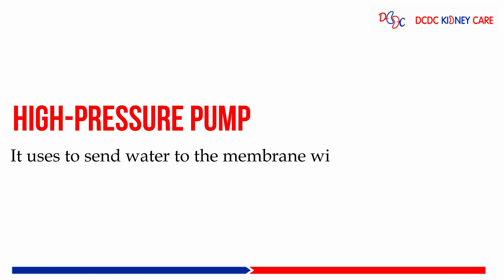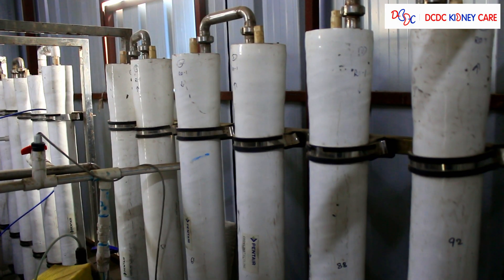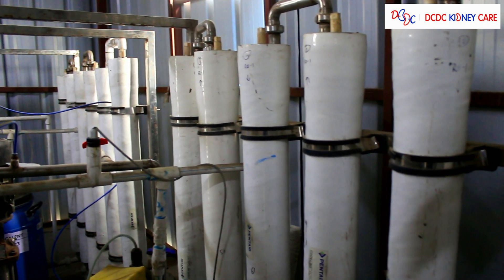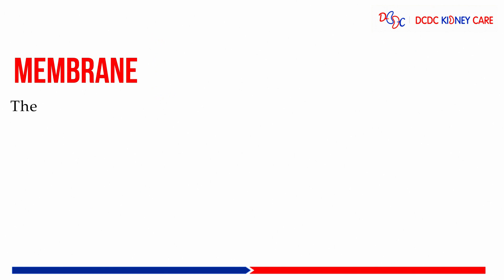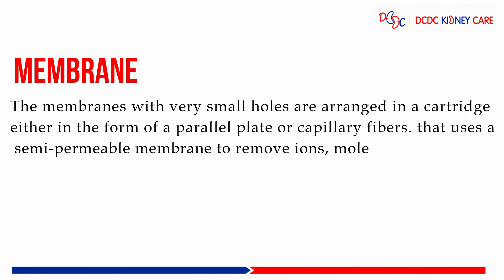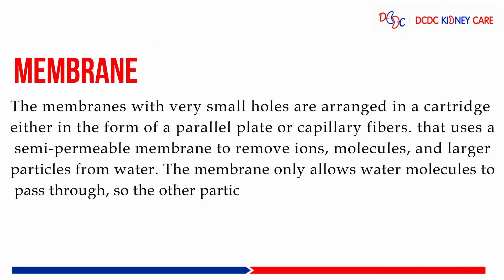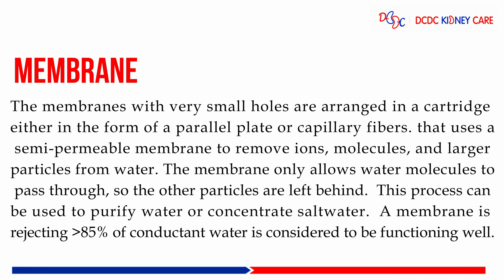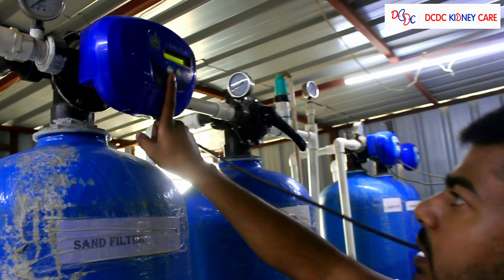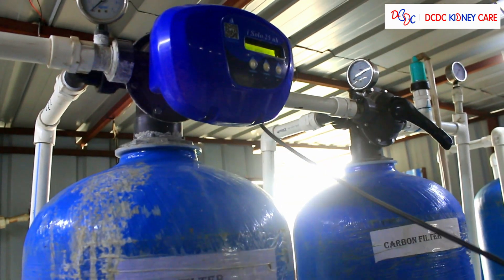Then the high pressure pump, which is used to send water to the membrane with high pressure. The membrane has very small holes and is arranged in a cartridge either in the form of a parallel plate or capillary fibers. It uses a semi-permeable membrane to remove ions, molecules, and large particles from water. The membrane only allows water molecules to pass through, so other particles are left behind. This process can be used to purify water or concentrate salt water.